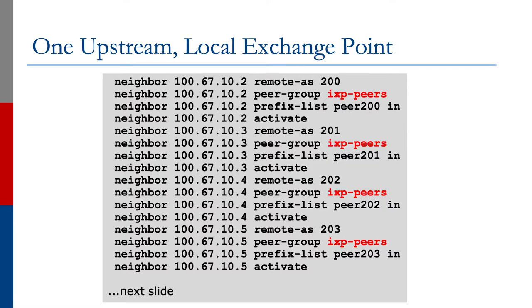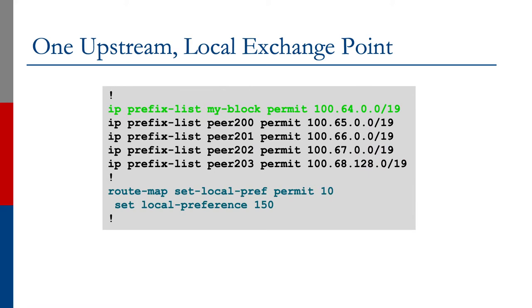We then apply this peer group to the Exchange Point neighbors. Each neighbor has the peer group applied to it. We've got an inbound filter because we always filter eBGP sessions in and out, as we have learned before. The prefix list is set up for each peer. The route map sets local preference — basically everything that we hear from the Exchange Point peer, we set local preference high; we've made it 150 in this example.